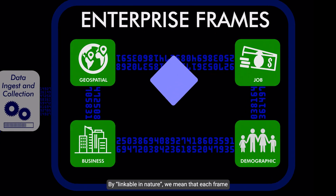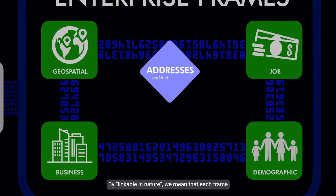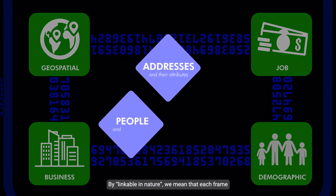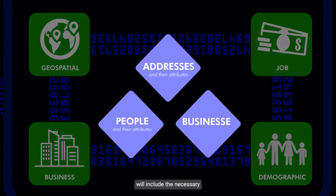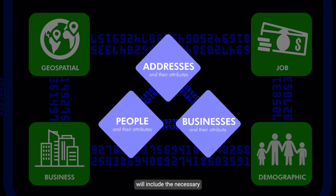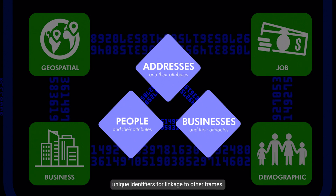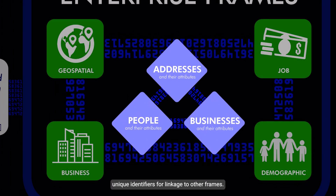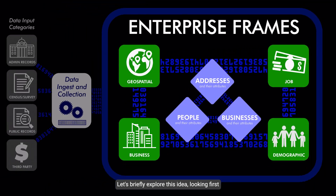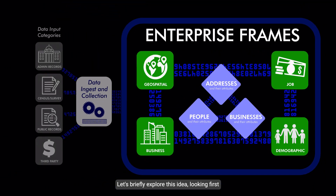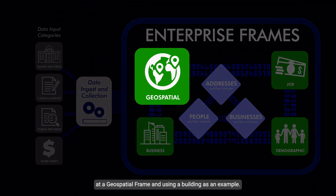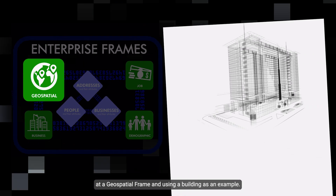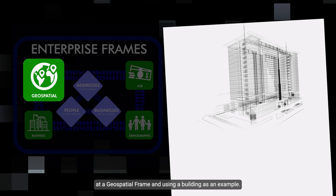By linkable in nature, we mean that each frame will include the necessary unique identifiers for linkage to other frames. Let's briefly explore this idea, looking first at a geospatial frame and using a building as an example.